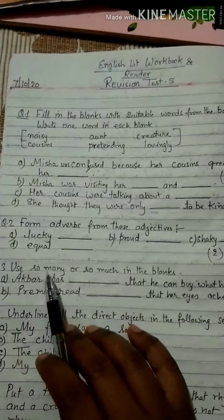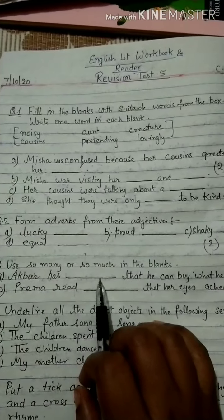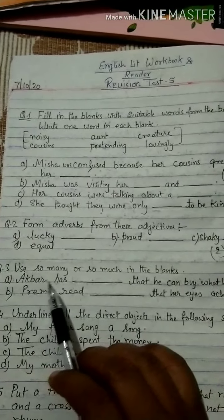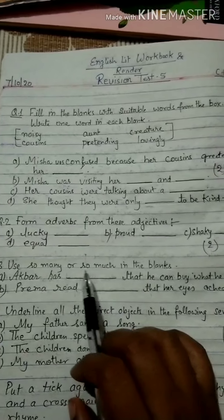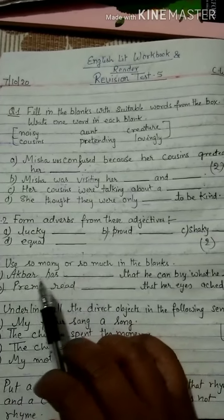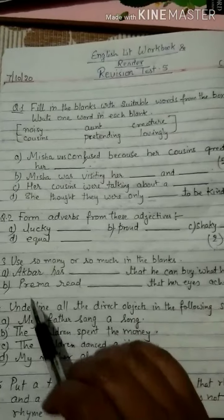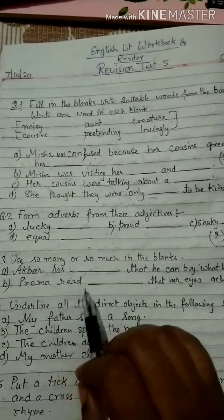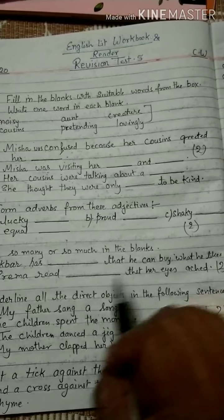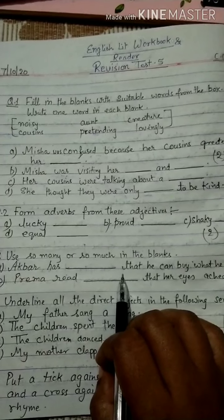Question number 3: Use 'so many' or 'so much' in the blanks. A. Akbar has ___ that he can buy what he likes — fill in 'so much' or 'so many'. B. Prema read ___ that her eyes aged — fill in 'so much' or 'so many' and fill in the words also.